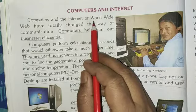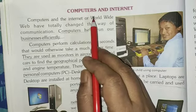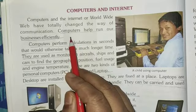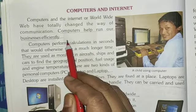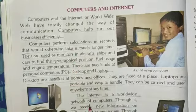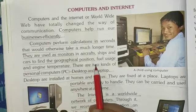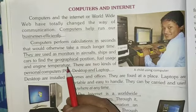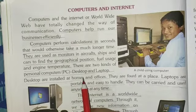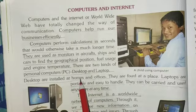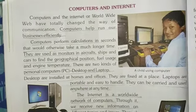The next form of communication we use today is computers and the Internet. Computers and the Internet, or World Wide Web, have totally changed the way of communication and help run our business efficiently. Computers perform calculations in seconds and are used as monitors in aircrafts, ships, and cars to find geographical position, fuel usage, and engine temperature. There are two kinds of personal computers: desktop and laptop.